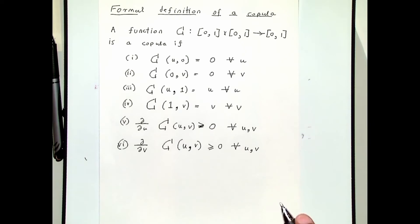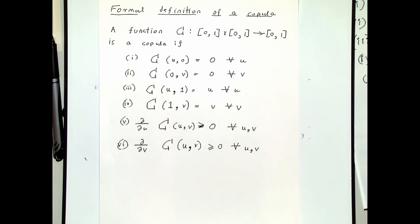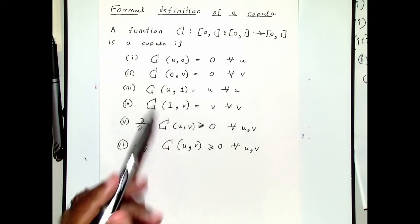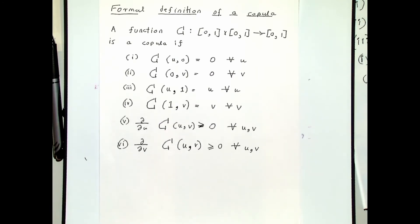These are the six conditions a copula must satisfy, and if a function satisfies these six conditions then it is a copula. What I am going to do is to do some examples — I will do three examples. In each example I will show you how to check these conditions. There are six conditions.